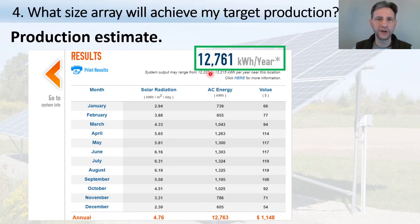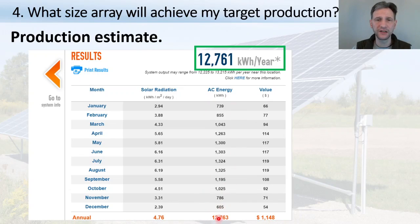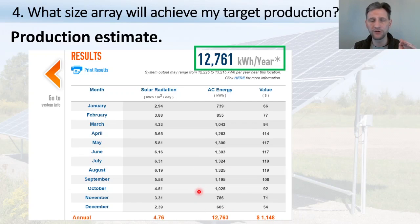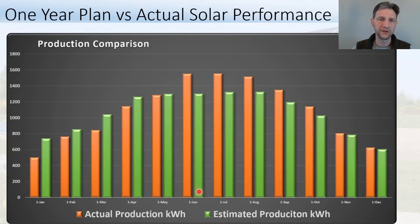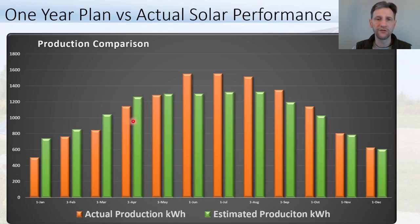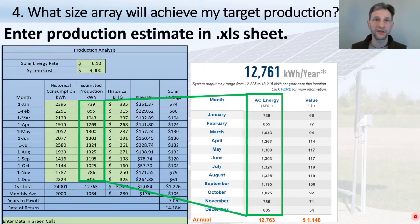The calculator outputs 12.7 megawatt-hours of annual production — right in line with my target. Importantly, it also gives the expected monthly output. I've plotted my actual production in orange against the website's estimated production in green, and they match very closely, giving me high confidence this tool will accurately predict your actual production.